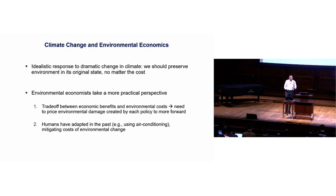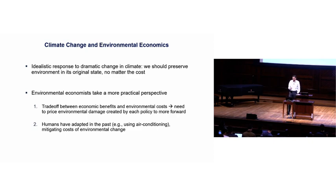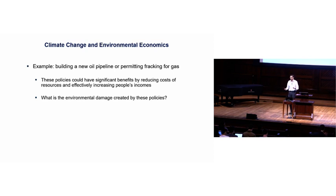To give a concrete example: suppose you're thinking about building a new oil pipeline or permitting fracking for natural gas. Some of the debate is based on first principles — we just should not be tapping into some of these environmental resources. In contrast, the economic approach recognizes that's clearly going to have some benefits — it will reduce the cost of energy in the US, which is a critical input, creating benefits by effectively increasing people's disposable incomes. But on the flip side, permitting more natural resource extraction will also create some environmental damage, so let's try to price that out and see if the costs seem greater than the benefits.